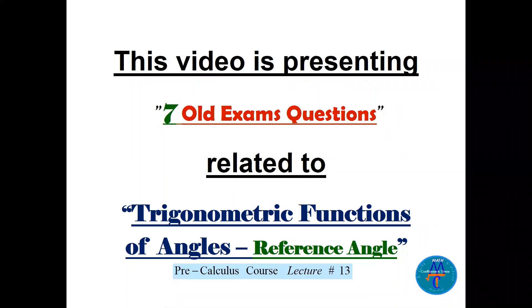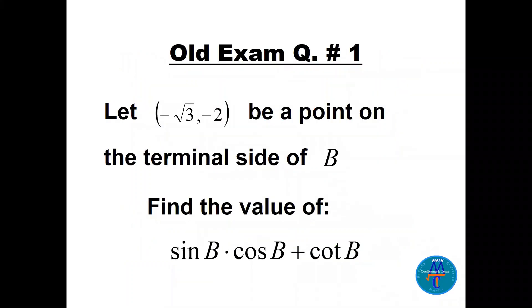Hello, my friends. This video presents seven old exam questions related to trigonometric functions of angles in Lecture 13. Question number one: we have the point (-√3, -2) on the terminal side of angle b.